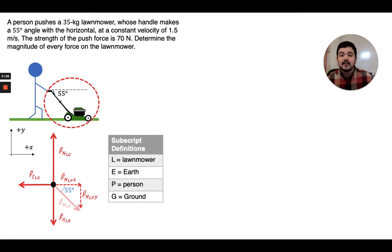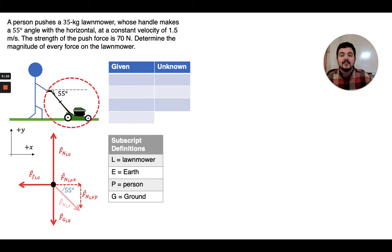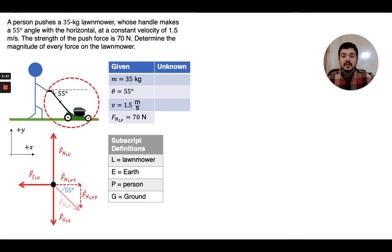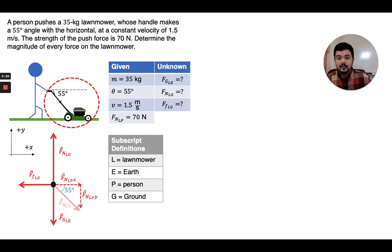Now that we have our force diagram drawn and know what forces are present, we can go ahead and make our list of givens and unknowns. What is given: the mass of the lawnmower is 35 kilograms, the handle makes a 55 degree angle relative to the horizontal, the speed of the lawnmower is 1.5 meters per second, and the push force — the normal force on the lawnmower by the person — has a magnitude of 70 newtons. What we don't know: the gravitational force on the lawnmower by the earth, the normal force on the lawnmower by the ground, and the friction force on the lawnmower by the ground.